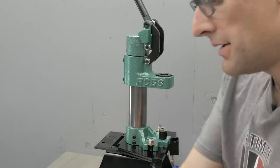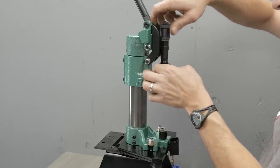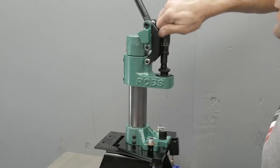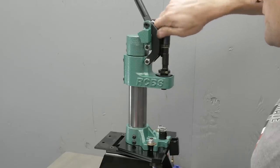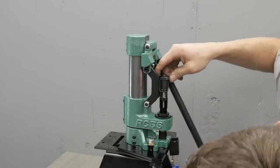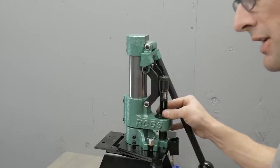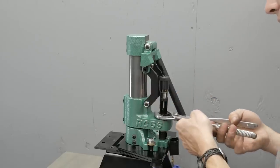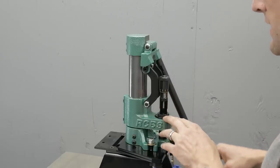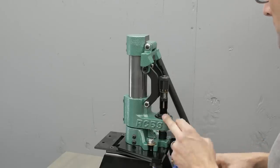So for this die, what we want to do is screw it basically down until it just about contacts the shell holder. That's the first step. So let's see where we're at here. A little bit more. Back it off a bit. And then we can go ahead and tighten the lock ring because this is not the critical setting for the die. The critical setting is going to be the actual depth of the micrometer adjustments.